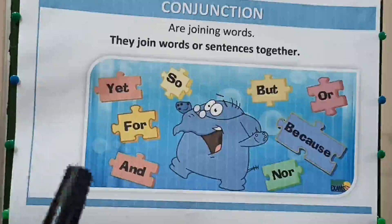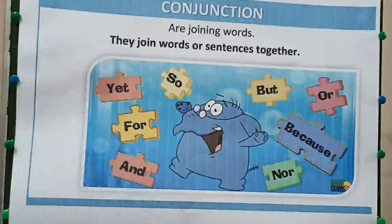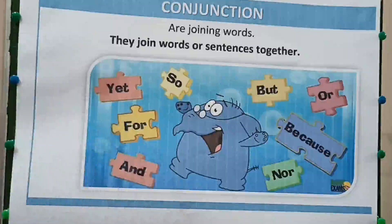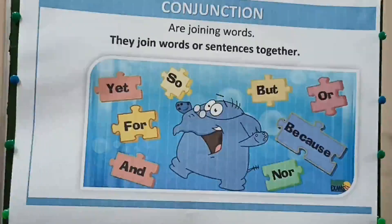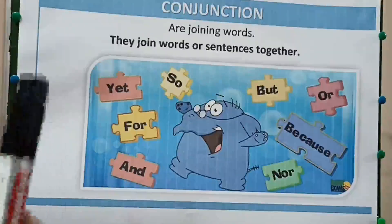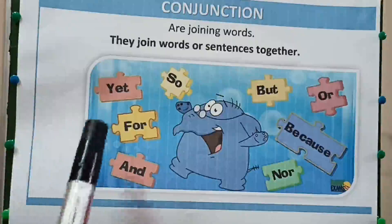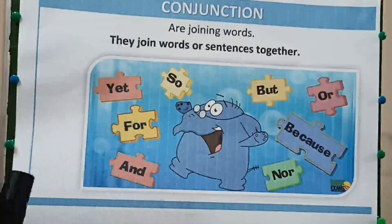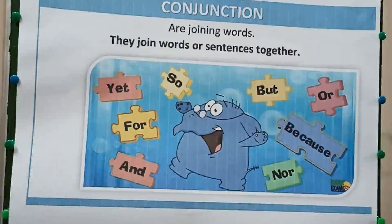Next is 'for'. 'For' is used for giving the reason, for explaining why. For example: he is overweight, for he eats too many cakes. So it's giving the reason.